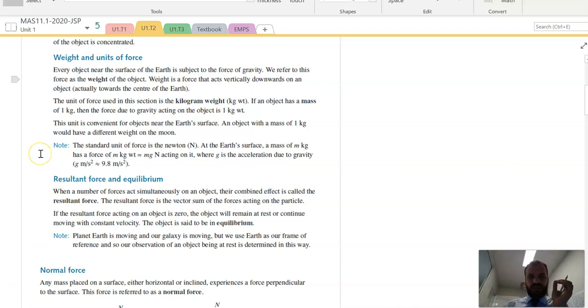Weight. So the unit of force we're going to talk about is kilogram weight. So if an object has a mass of one kilogram, then the force due to gravity acting on the object is one kilogram weight. Now, there's a note here, but just to talk about it.